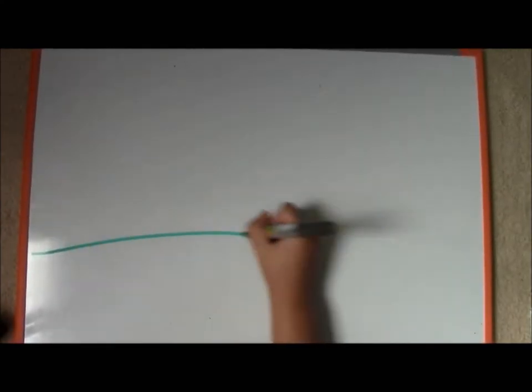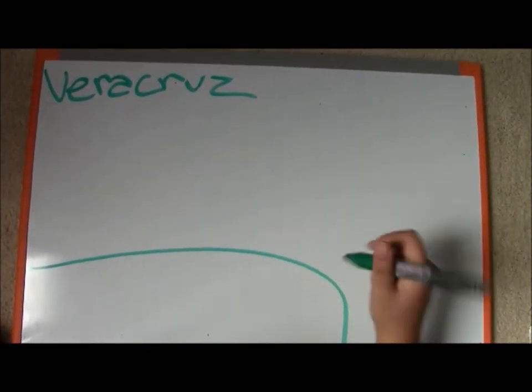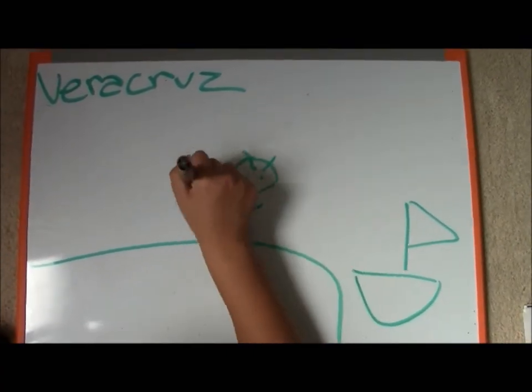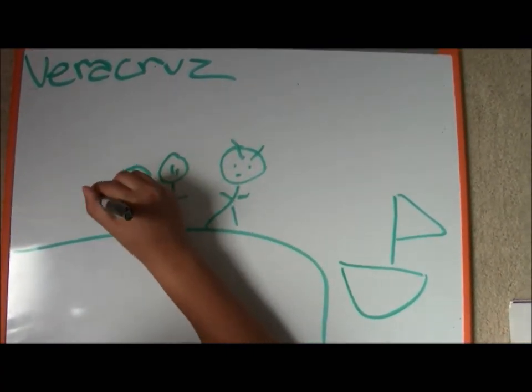Cortez later sailed off the Mexican coast and founded the area now known as Veracruz. Here, he trained his army and then burned his ships to ensure their loyalty to the conquest.